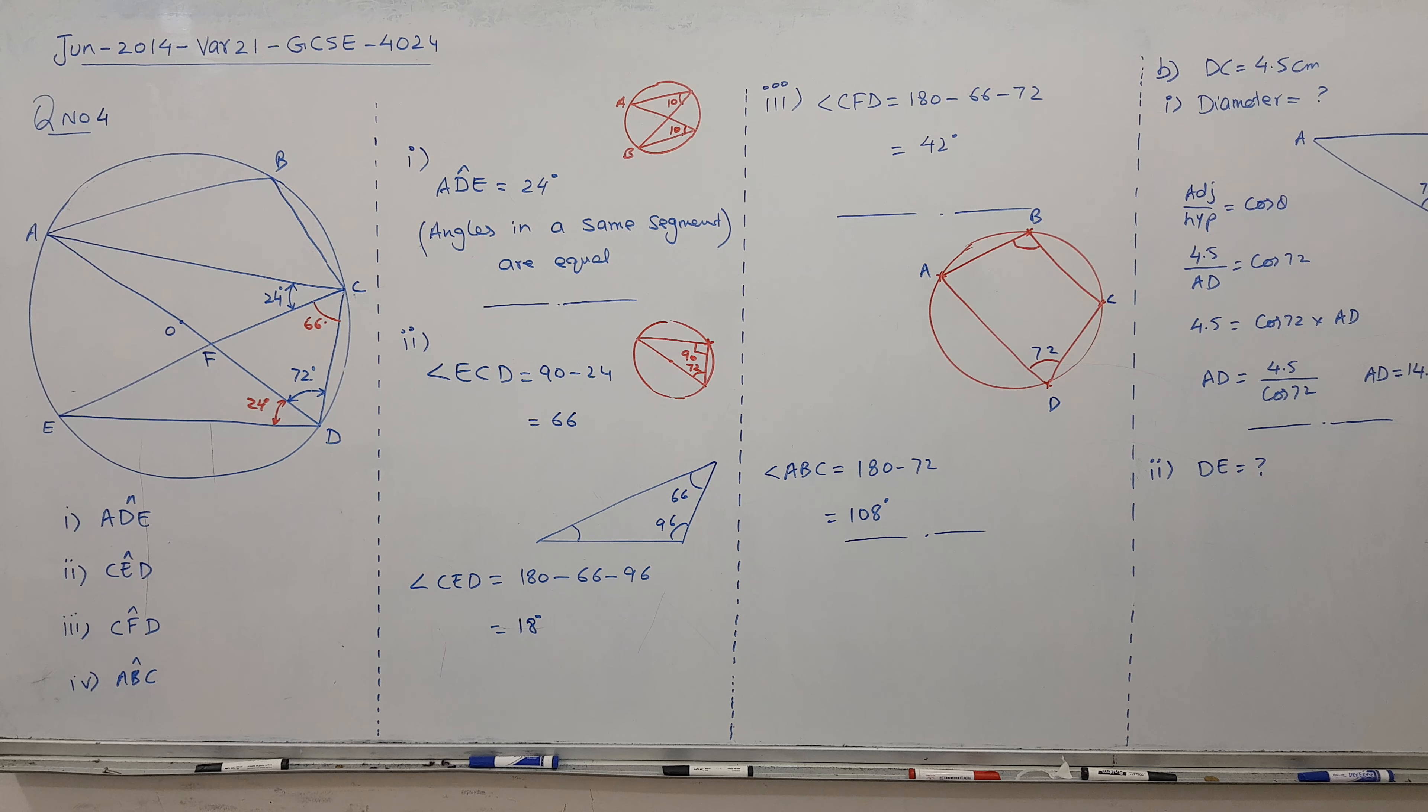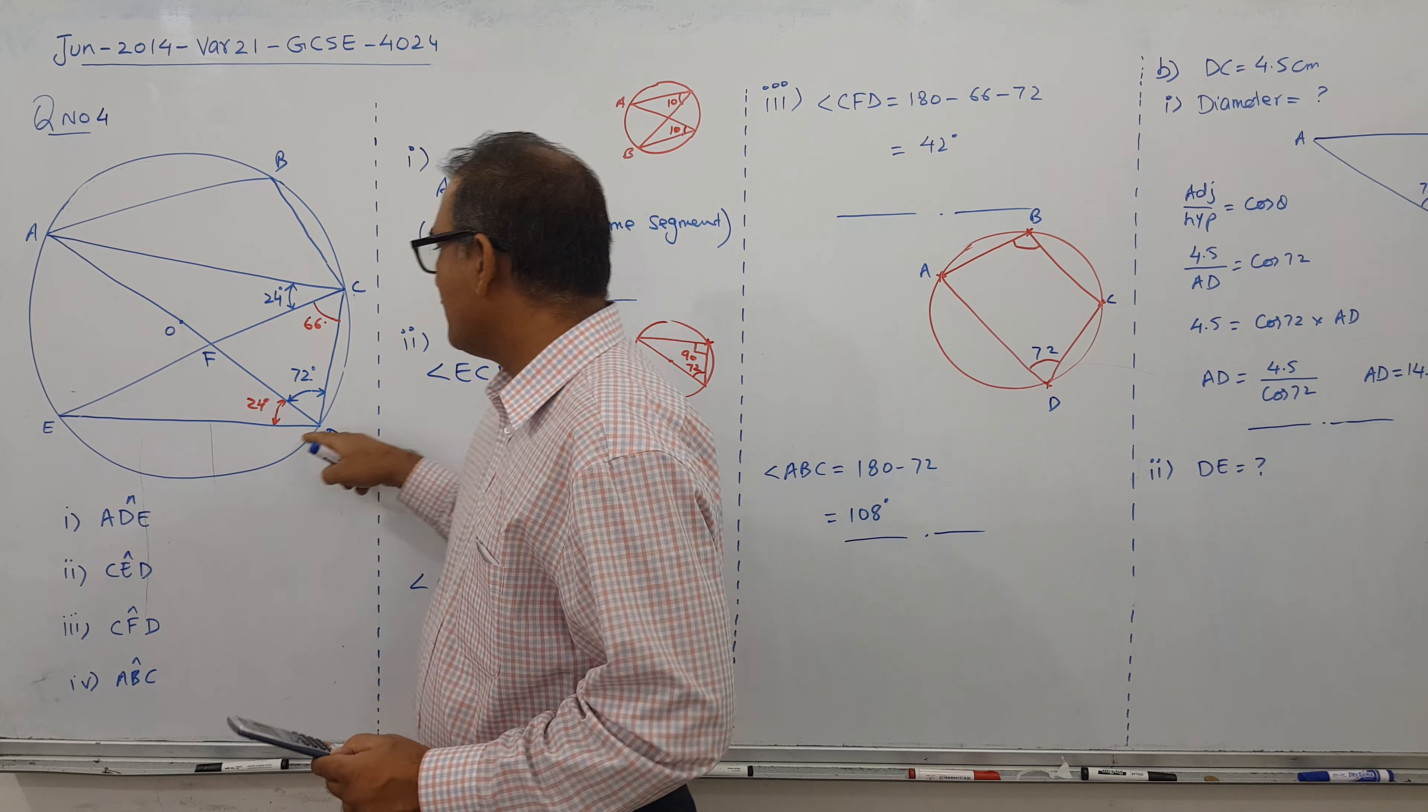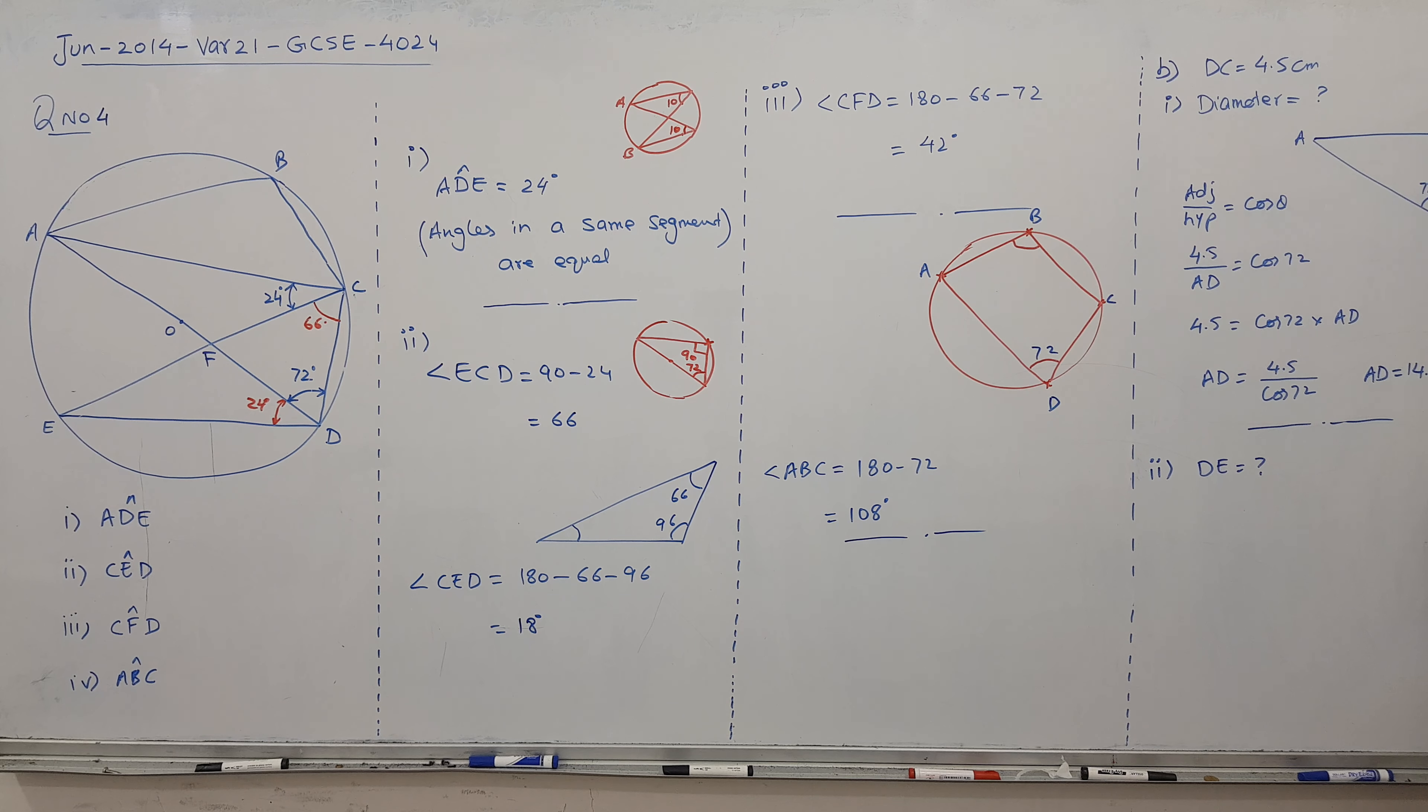Now the last part is asking for DE. I have only two choices: this triangle or this triangle. I'll make a big triangle. This is C, this is D, and this is E. This angle is 18 degrees, and this angle is 66. This is CD, which is 4.5, and I'm looking for ED.